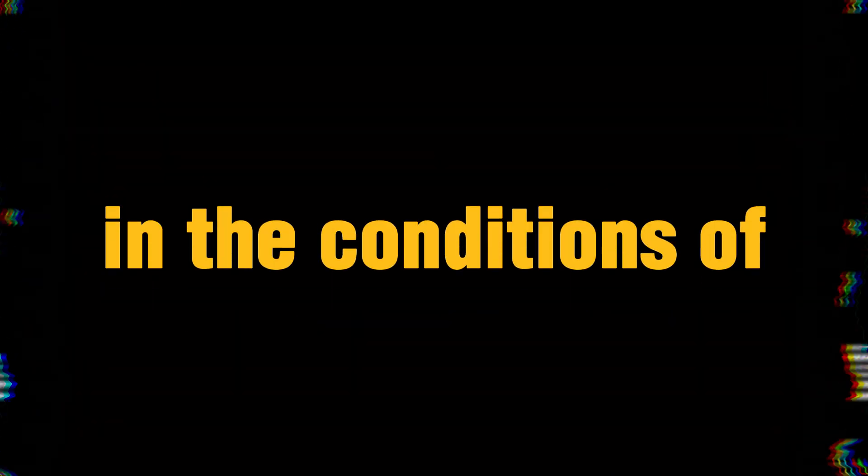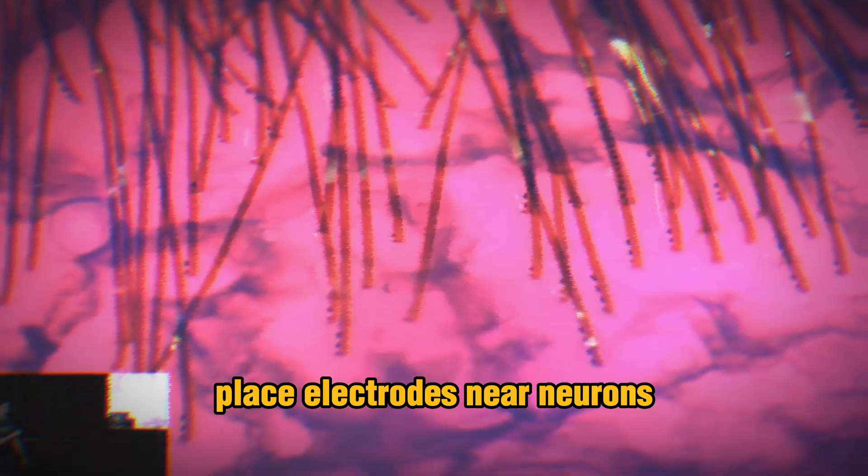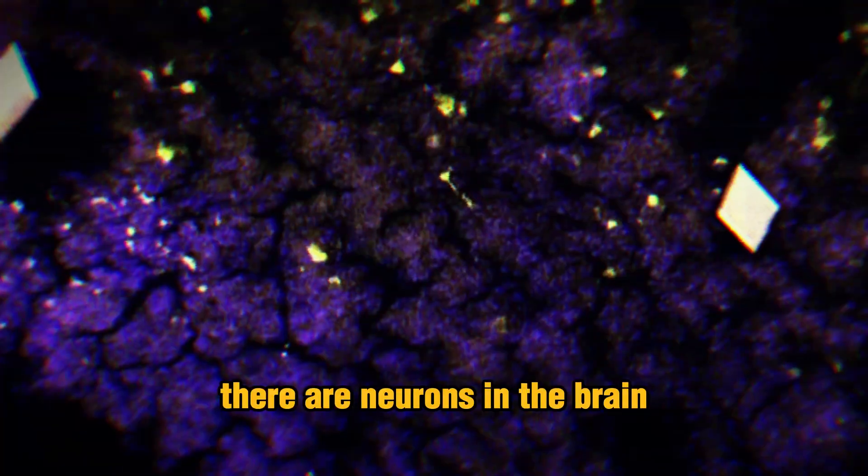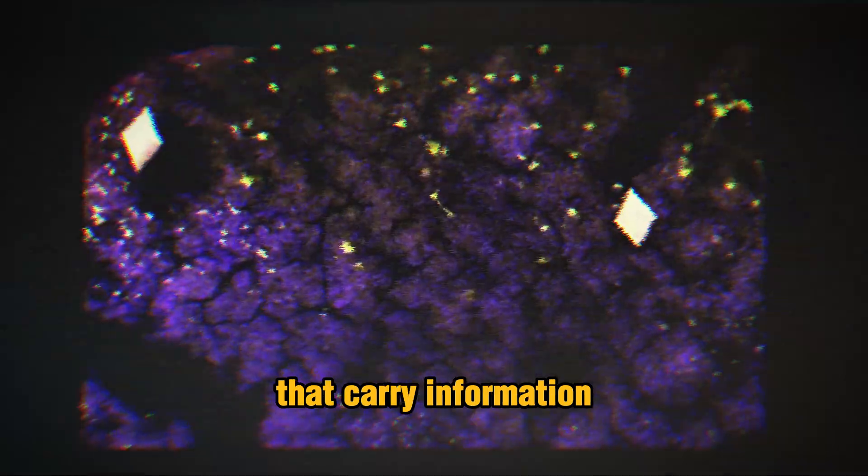To receive the signal from neurons, we place electrodes near neurons in order to detect electric signals. There are neurons in the brain that carry information about everything we see, feel, touch or think.